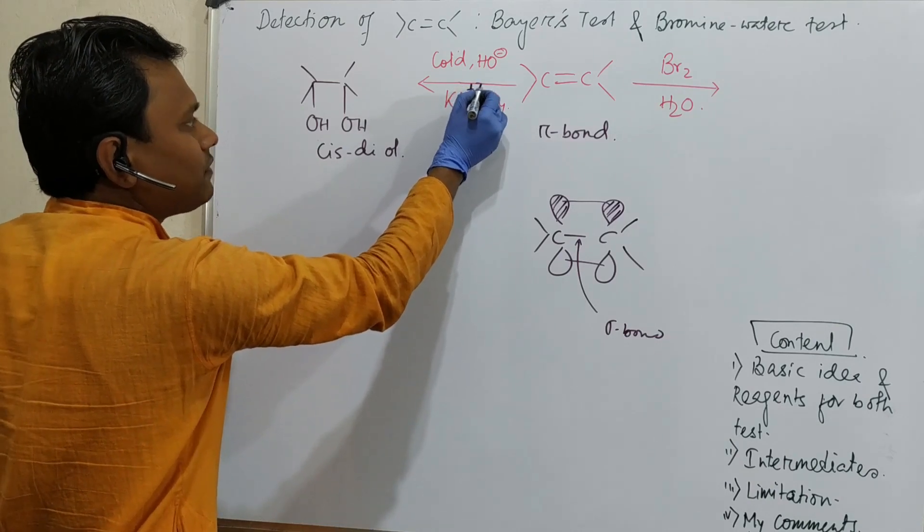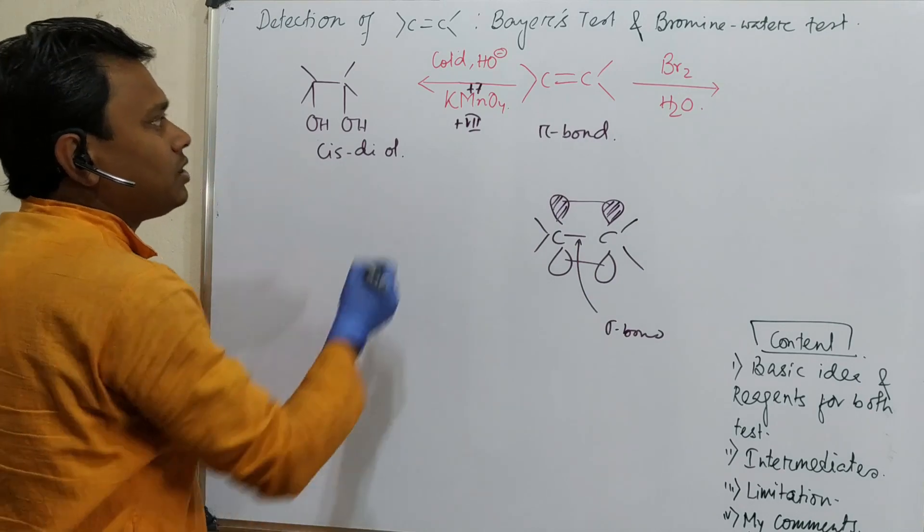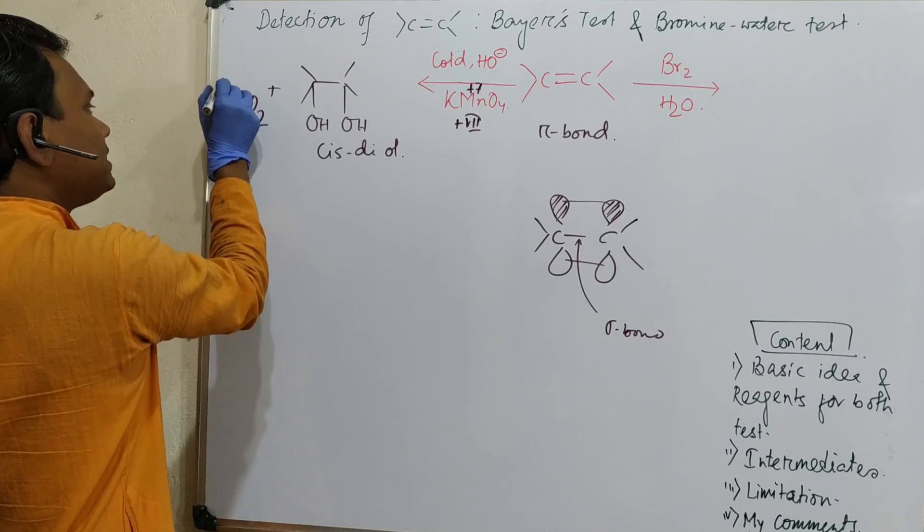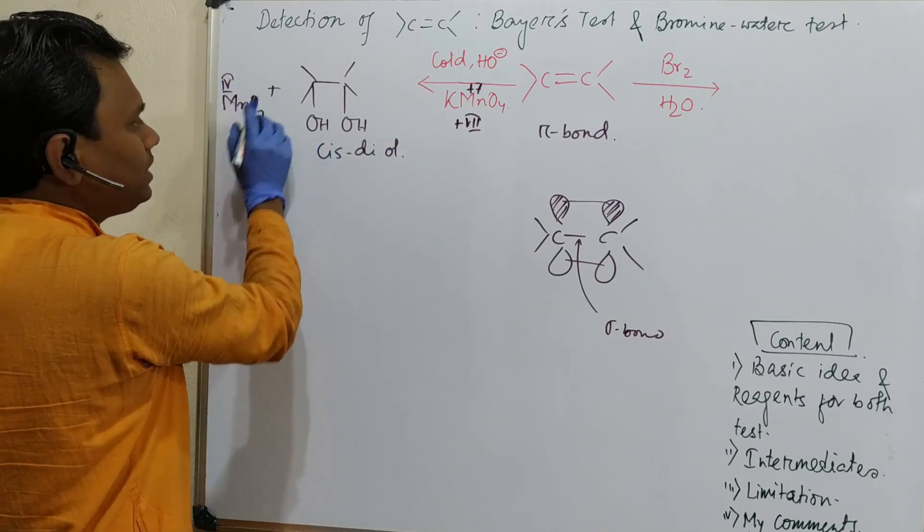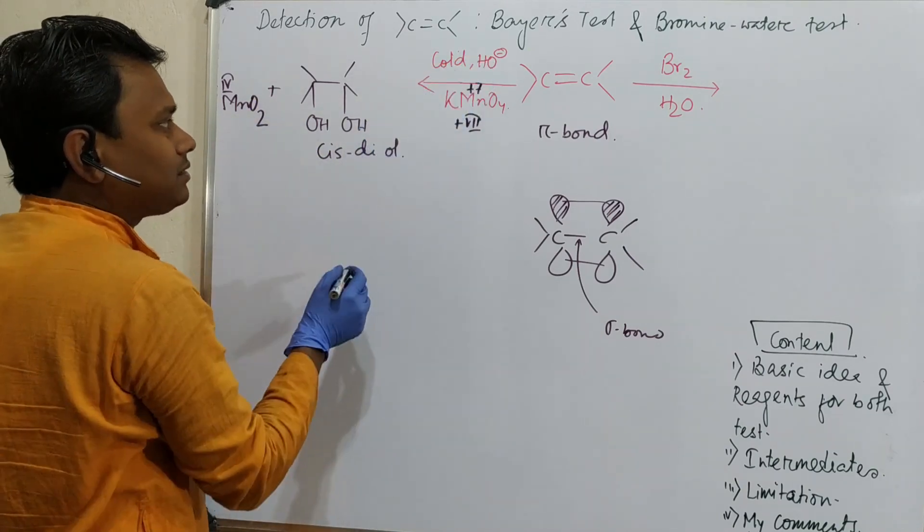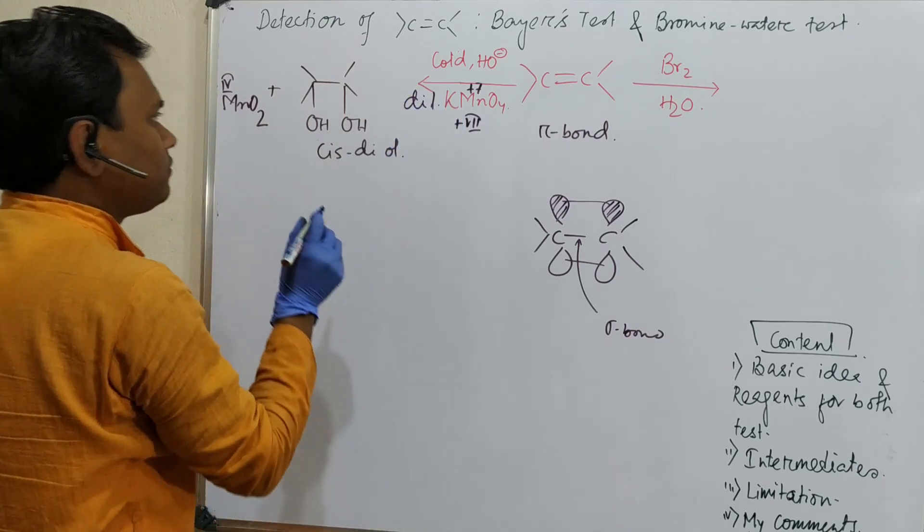What is the fate of this? Manganese is plus seven oxidation state. This produces why cold alkaline and diluted. Why? First of all, if you increase temperature or concentration of KMnO4, then there is a chance of mixture of oxidants.